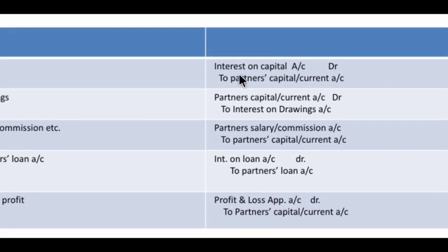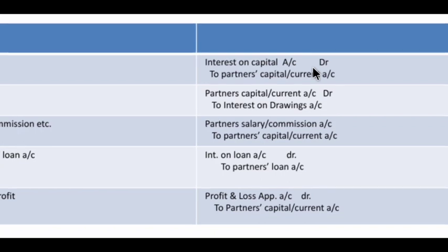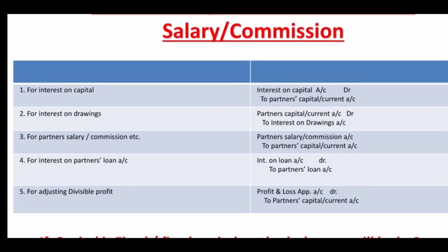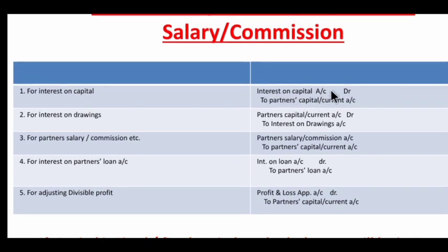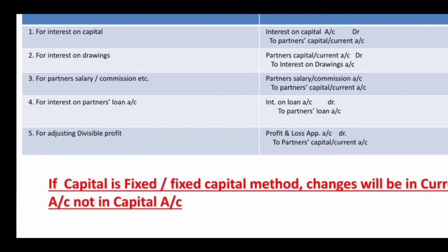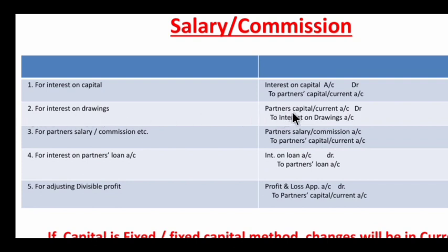For Interest on Capital: Interest on Capital Account is debited (it is a loss/expense), and credited to Partners' Capital or Current Account. This is a provision entry. For Interest on Drawings: Partners' Capital or Current Account is debited, and Interest on Drawings Account is credited — Interest on Drawings is income for the firm. For Partner Salary/Commission: the entry is Salary/Commission Account debit, to Partner's Capital Account.